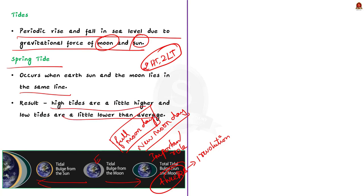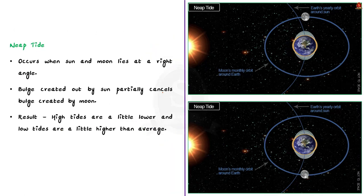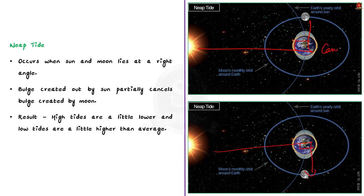But what happens when the sun and moon are at right angles to each other? When this happens, the bulge of the ocean caused by the sun partially cancels out the bulge caused by the moon. This produces moderate tides known as neap tides. During neap tides, high tides are a little lower and low tides are a little higher than average. An additional point to note is that for every lunar month, earth experiences two spring tides and two neap tides.